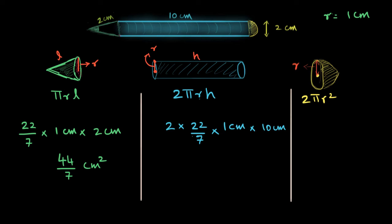Now let's find this. This is going to be 2 times 22, 44 times 10, 440. So 440/7 centimeters squared. This shouldn't surprise us. Clearly, this surface area should be much bigger than this. It turns out it's 10 times more, 10 times bigger.